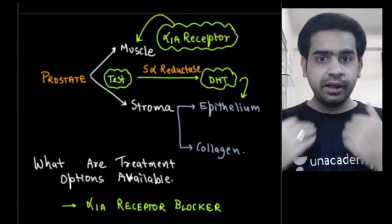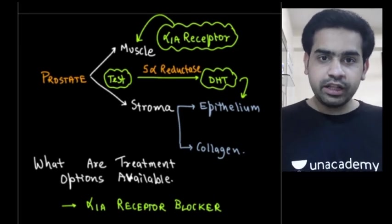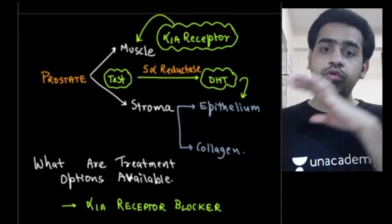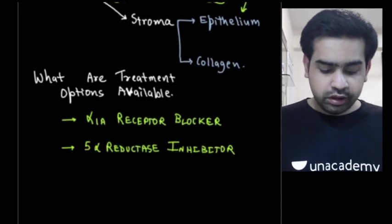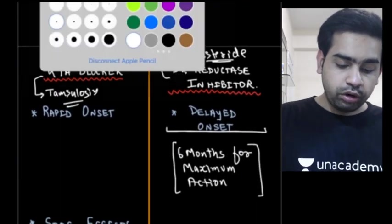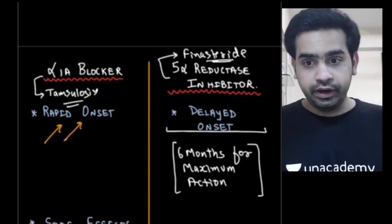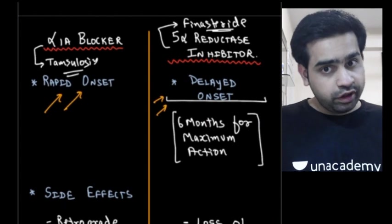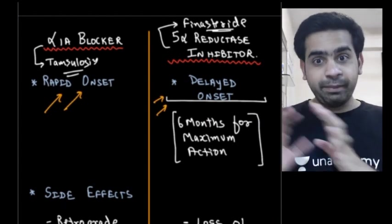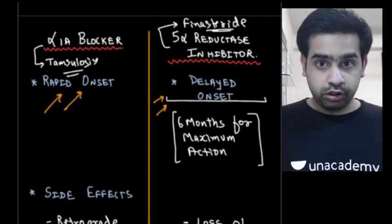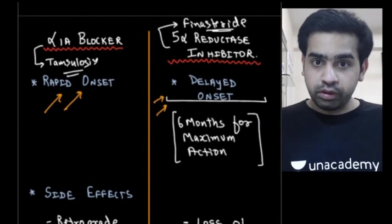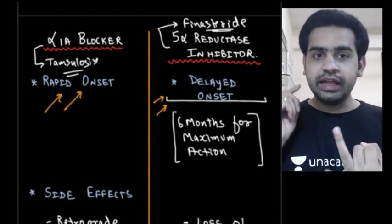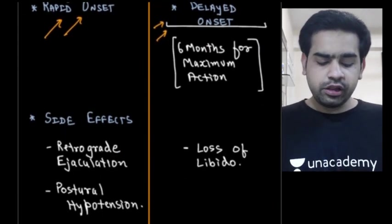With a 5-alpha reductase inhibitor like finasteride, it takes time for the epithelium to downgrade and the prostate to reduce in size, so there is a delayed onset of action. Effects begin at about one month, but maximum effect requires six months of treatment. Key point: alpha-1a blockers give rapid onset of action; 5-alpha reductase inhibitors give delayed onset of action with maximum effect at six months.